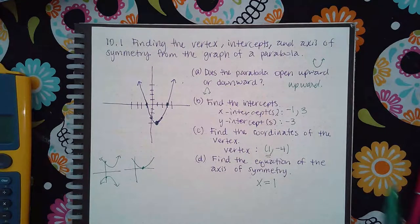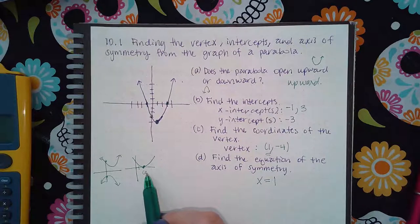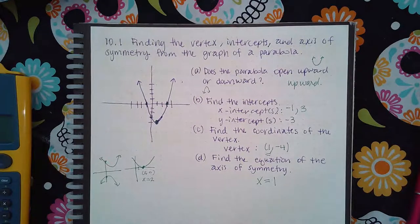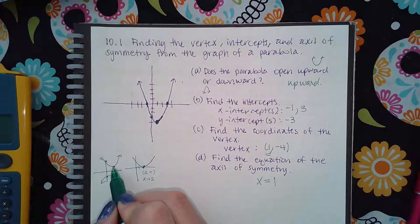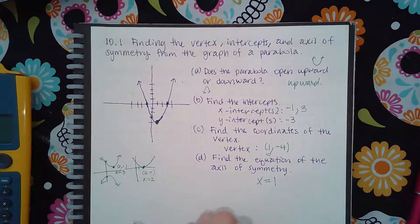Okay? Now, if this was at 2, my vertex would have been 2 and 0. So then my axis of symmetry would have been 2. Let's say I'm over here and that point is 3 and 1, then my axis of symmetry would have been 3.